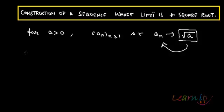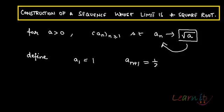So let us define some terms. Let us define a₁ as 1 and a_{n+1} as half of aₙ plus a upon aₙ.